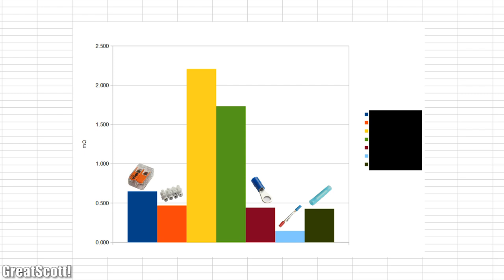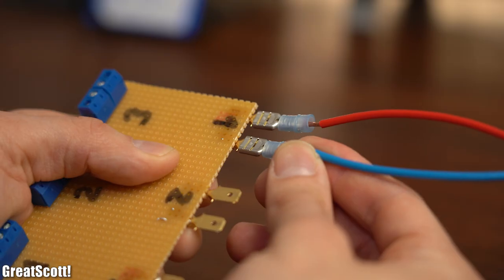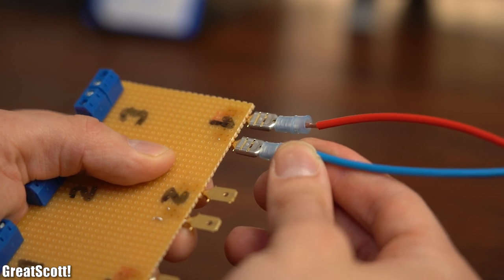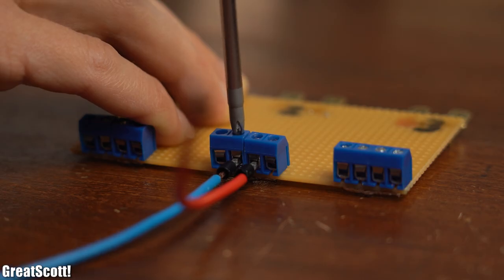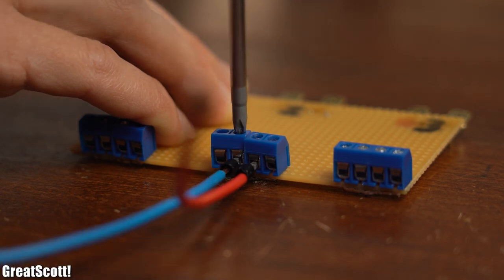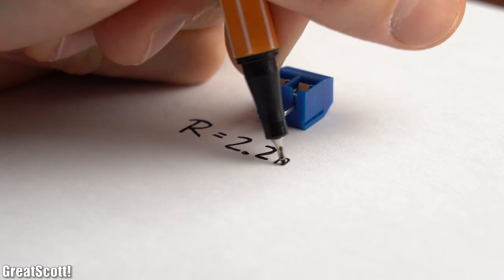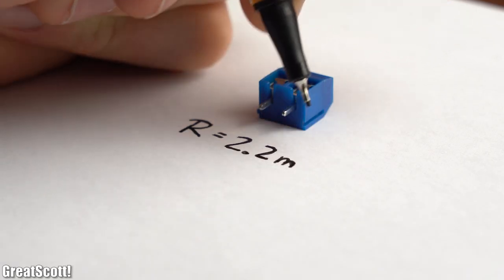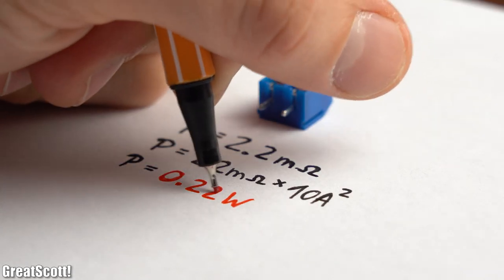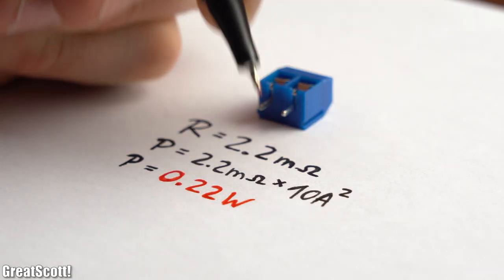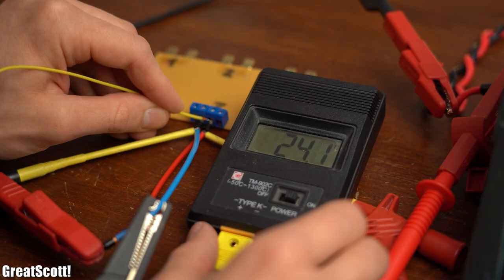The two worst performing connectors were the cable shoe push-on, which was obvious due to its wiggle room, and the PCB screw terminal, which was quite a big shock for me since I love using them. But keep calm, because with their average resistance of around 2.2 milliohms, they create a power loss of 0.22 watts at 10A, which is certainly a bit risky, but seriously, when are you going to draw 10A through them?